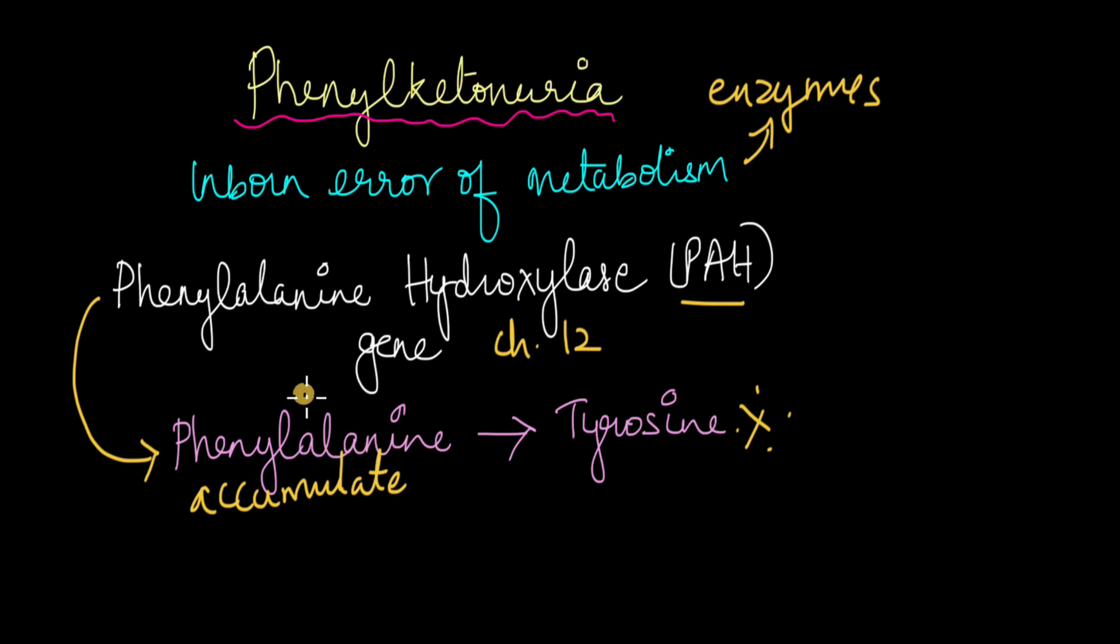Phenylalanine needs to be converted to tyrosine so it can be metabolized and removed from the body. Without this enzyme, because the mutation produces very little enzyme or sometimes no enzyme, people with phenylketonuria begin to accumulate phenylalanine in their bodies, which is not good.